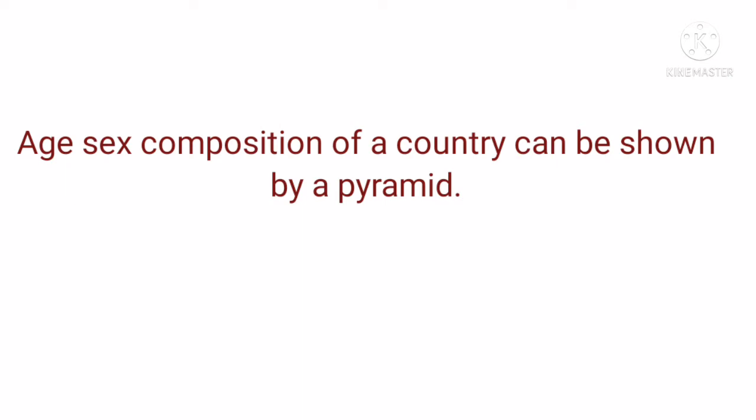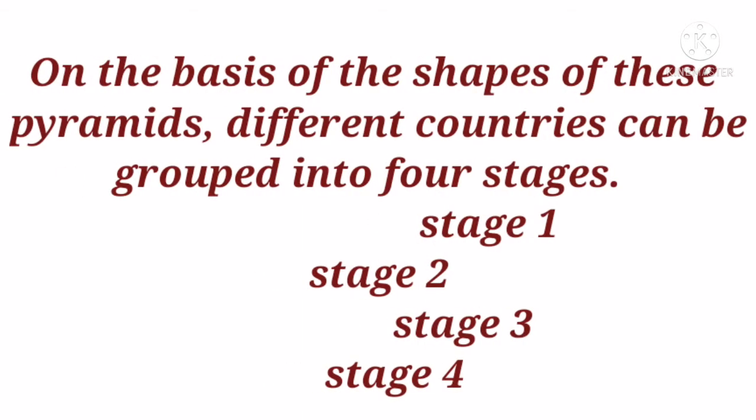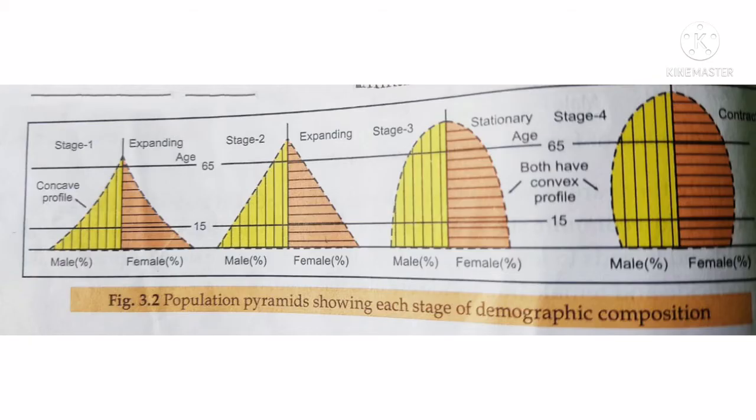This pyramid also helps to understand a country in a better way. On the basis of the shape of the pyramid, different countries can be grouped into four stages: Stage 1, Stage 2, Stage 3, and Stage 4. Different stages are characterized by different demographic characteristics, such as high birth rate and low death rate.